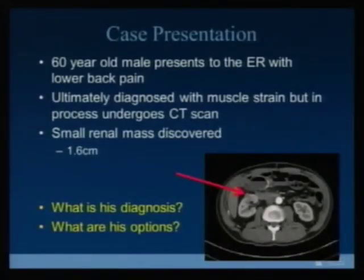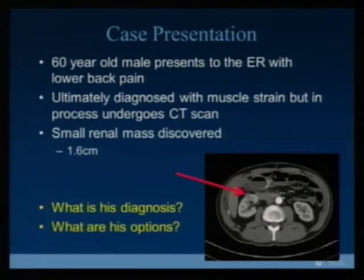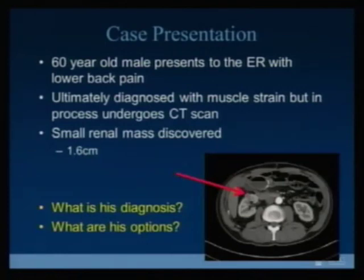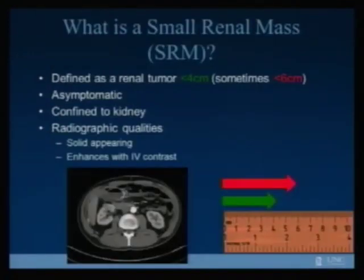I figured we'd start with a case presentation to put a patient to the decision-making process. This is a patient I had — a 60-year-old male who presented to the ER with lower back pain. This is actually a really common scenario. He came in with another problem, and the ER obtained a CT scan even though his problem was just some muscle strain. He was ultimately also diagnosed with this small renal mass which was discovered at 1.6 centimeters. So the question is: what's his diagnosis and what are his options?